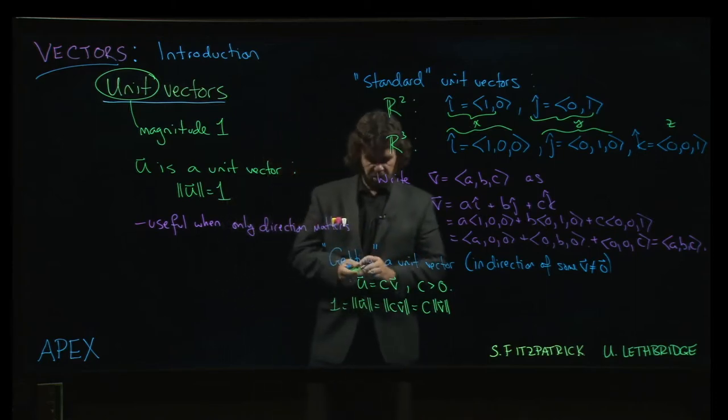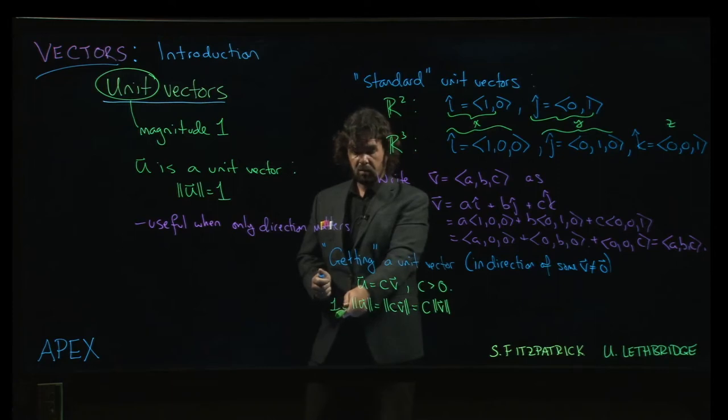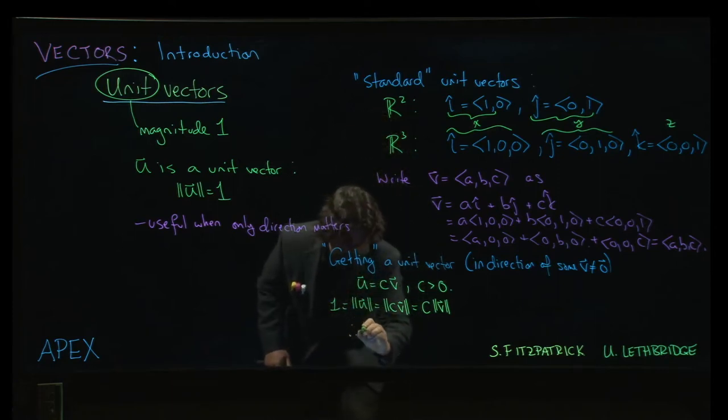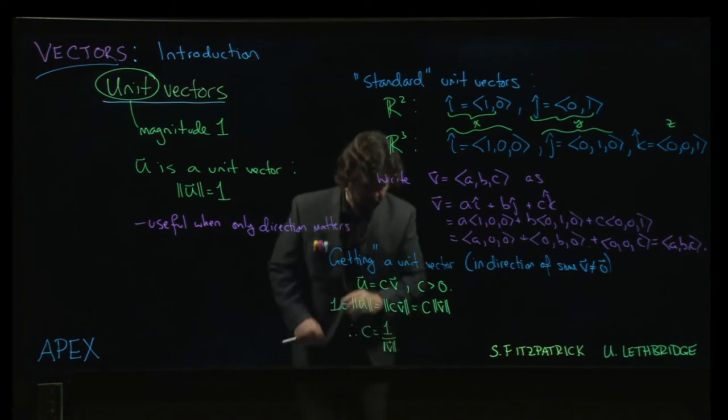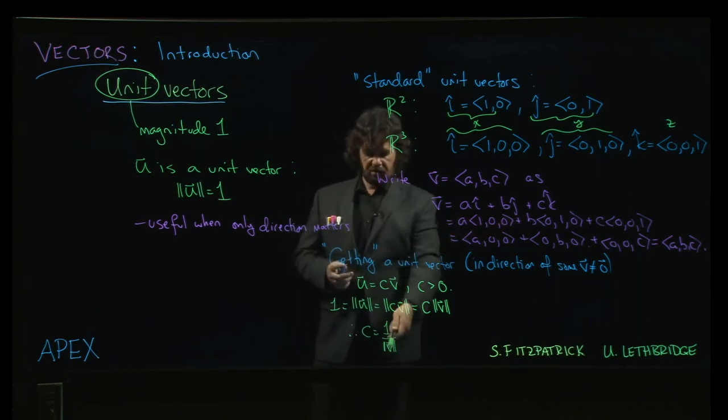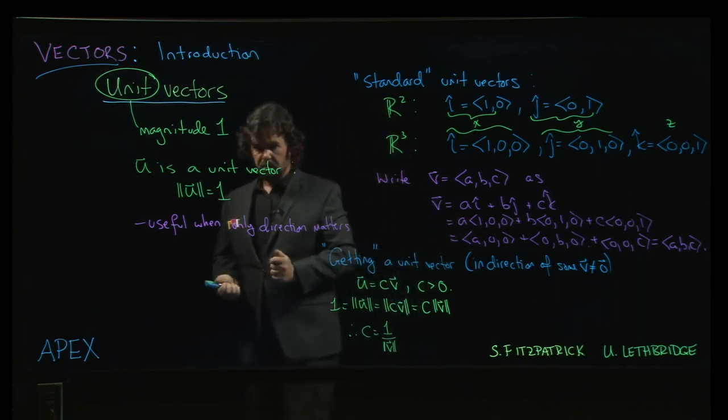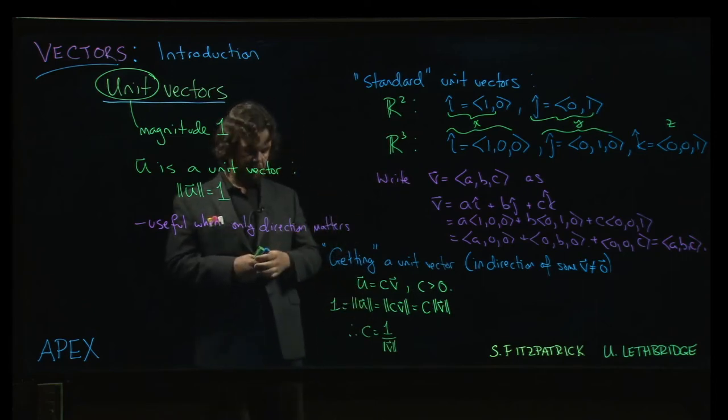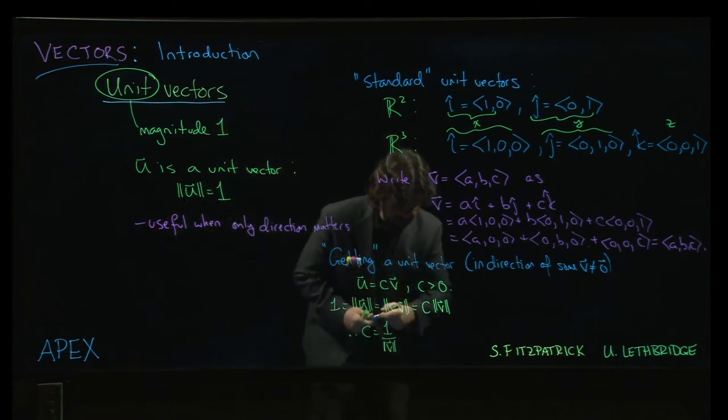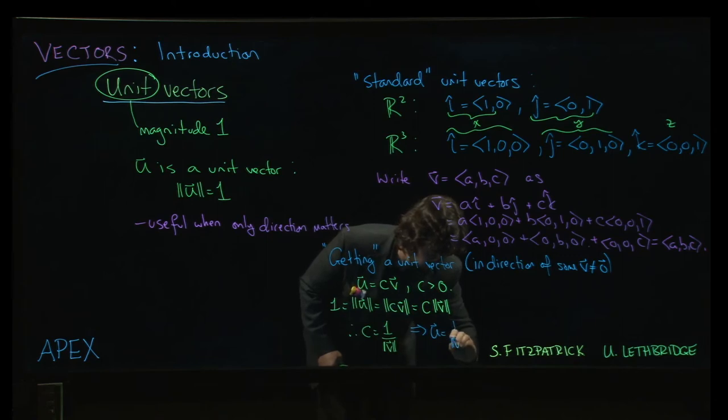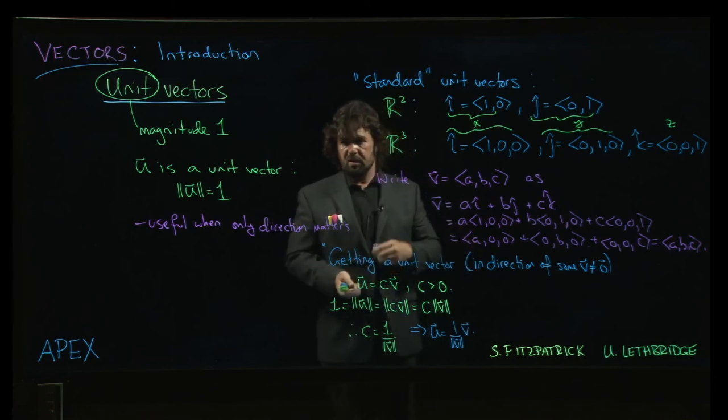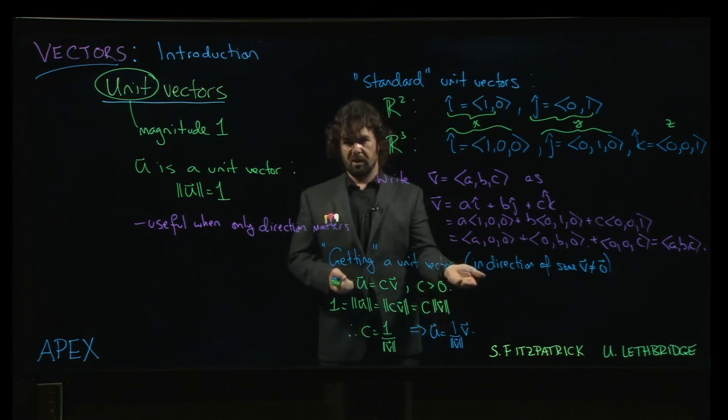Okay, well, that lets us solve for c. c times the magnitude of v has to be equal to 1, and that means that c has to be 1 over the magnitude of v, right? And we're excluding the 0 vector here, so the magnitude of any non-zero vector will be non-zero, and so that makes sense—we're not dividing by 0. And that gives us the unit vector as 1 over the magnitude of v times v. So if somebody hands you a vector and you want a unit vector that's in the same direction as that vector you were given, you just divide by the magnitude and then you'll have a unit vector.